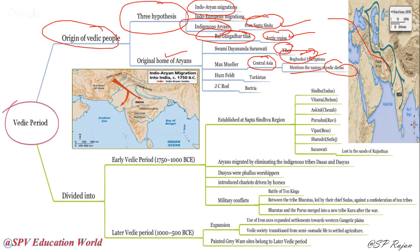Haust felt said Aryans originated from Turkestan, and JC Rod said they originated in Bactria. These are all different thoughts propounded about where Aryans migrated from — Central Asia, Arctic, and various other hypotheses — but there are no clear evidences; there are many perceptions and references.